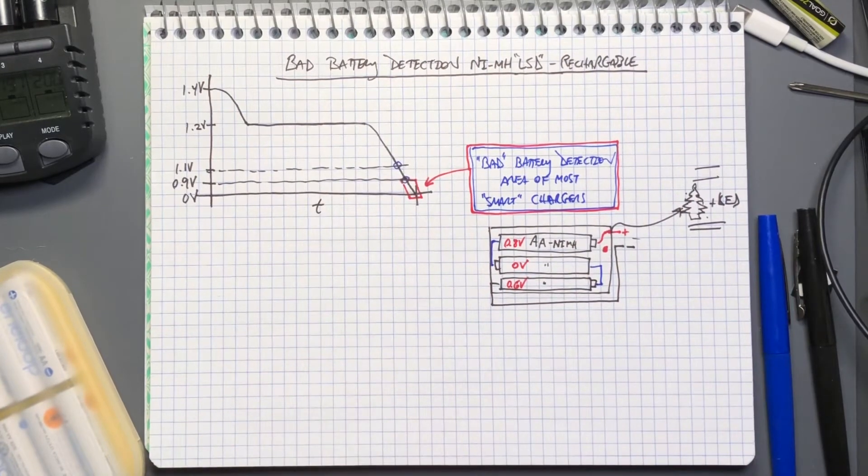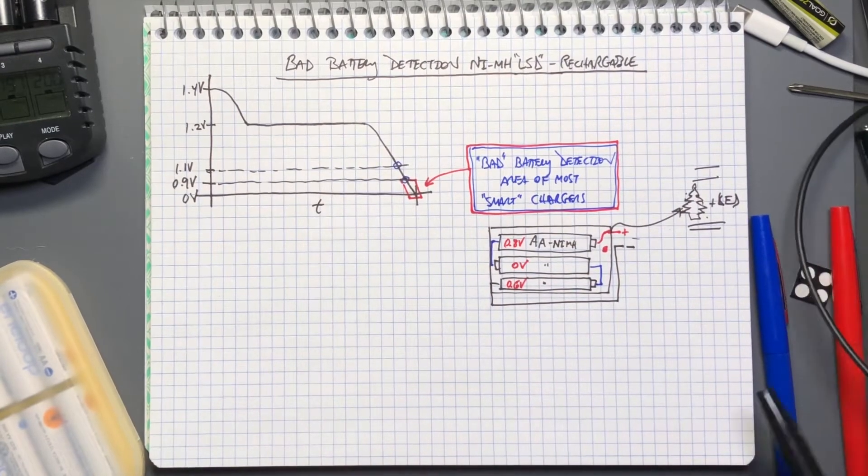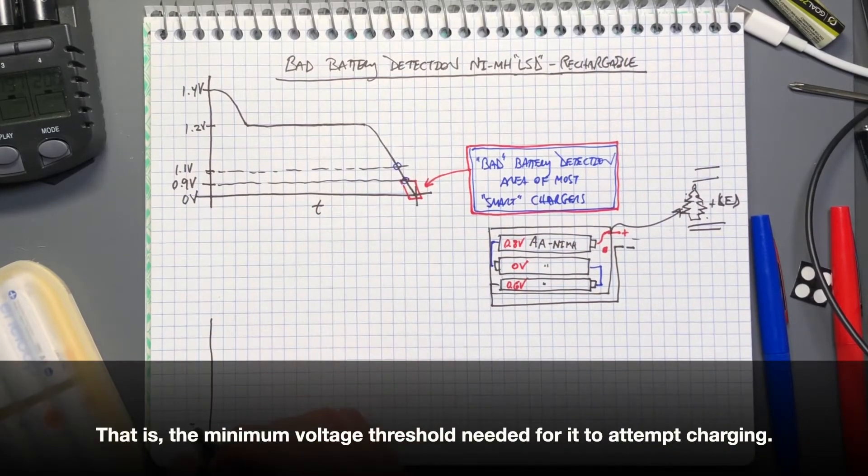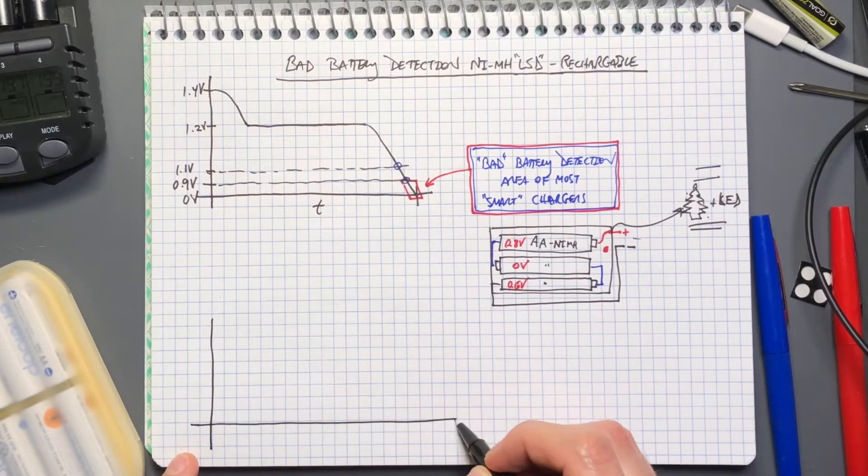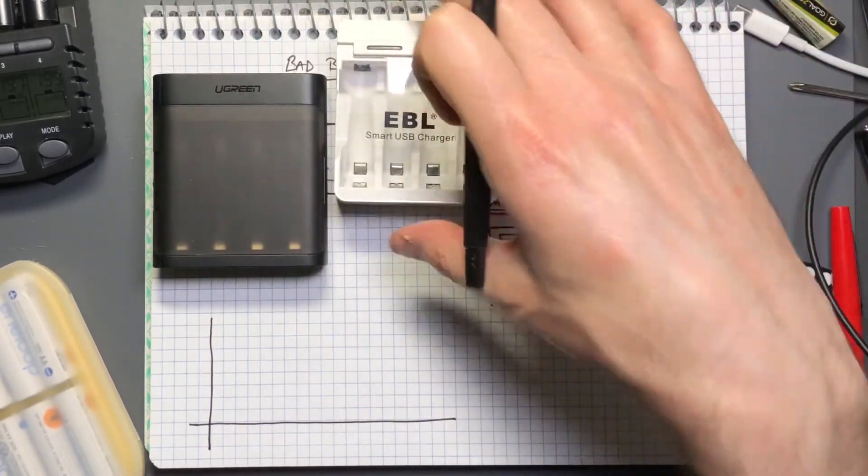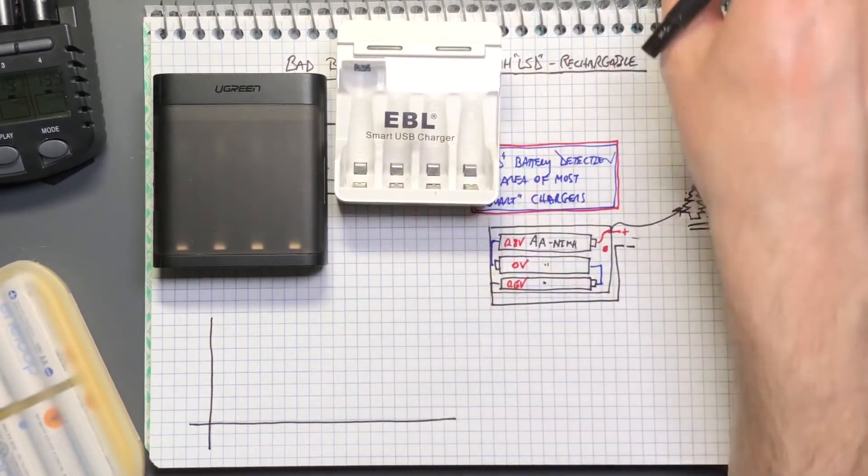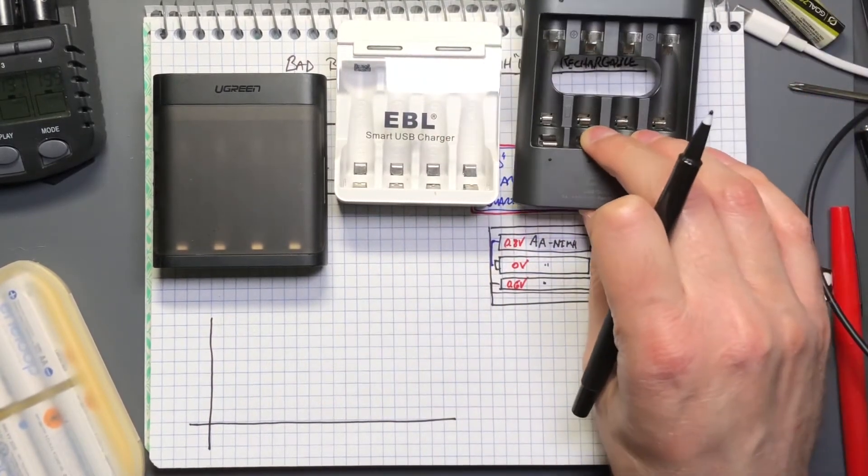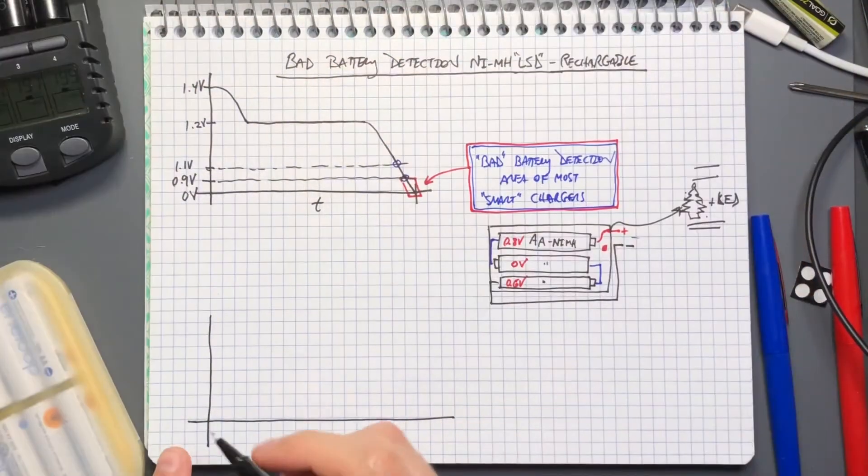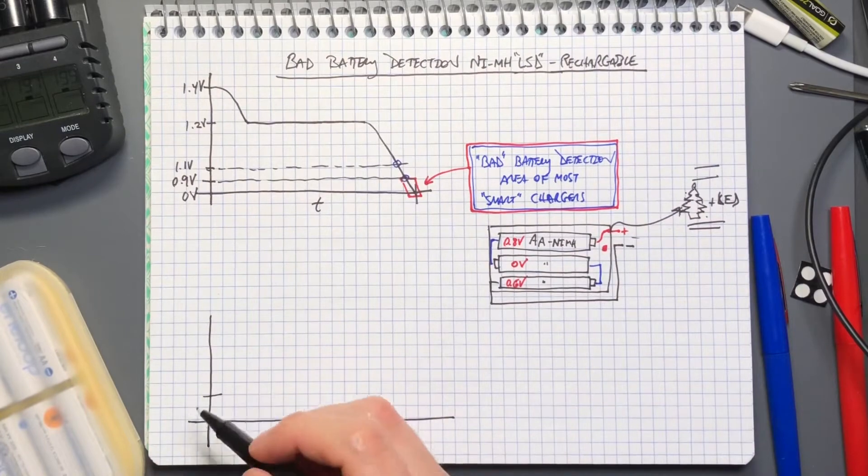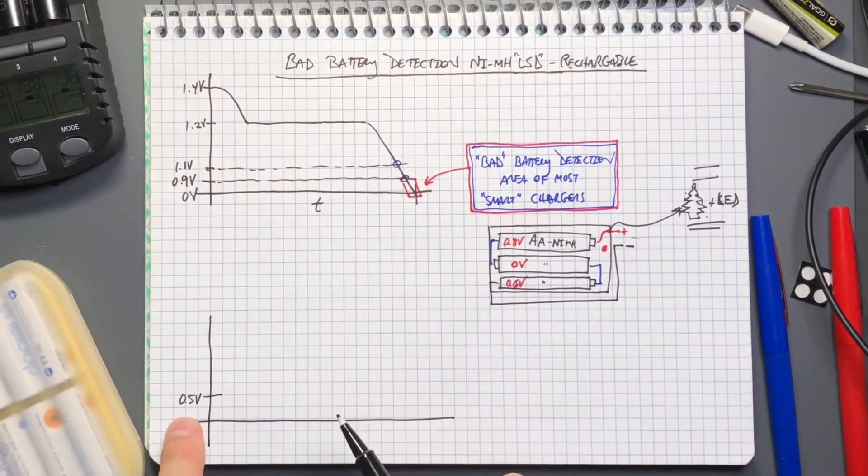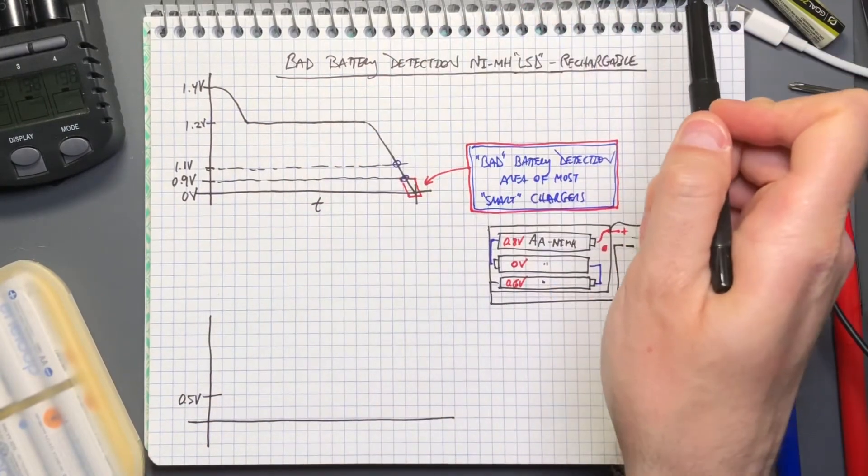What's happening is it's not meeting its minimum threshold for what it will charge at. A lot of these chargers including the Ugreen one and this smart USB EBL charger and definitely the LaCrosse Technology all have some low threshold. In the case of LaCrosse Technology I've measured it at 0.5 volts.